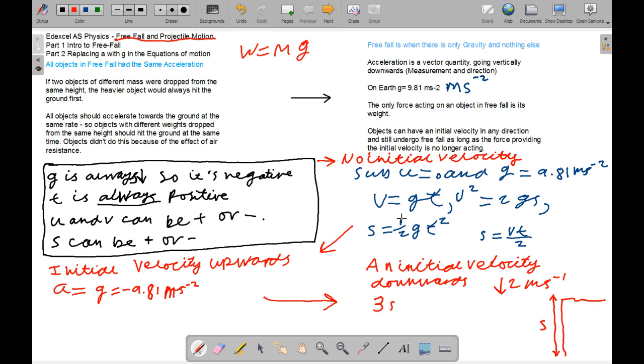So A is equivalent to G, which is equivalent to minus 9.81, as when you're in freefall, you have to go downwards and you take upwards as positive in the physics equations. And the initial velocity downwards. We'll look at this example.